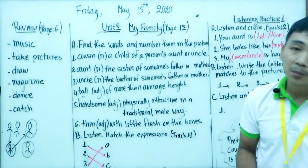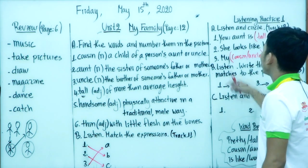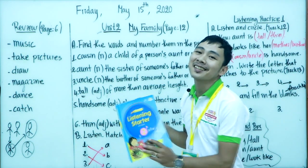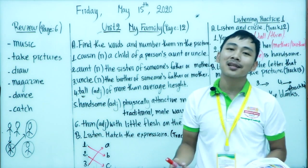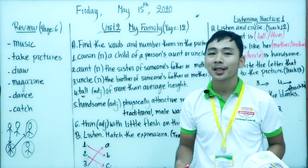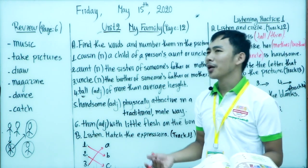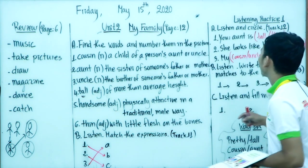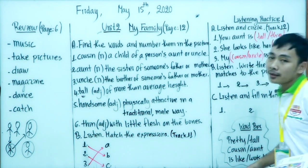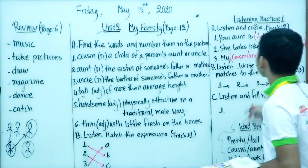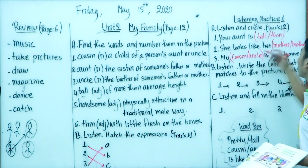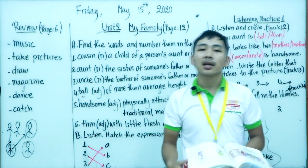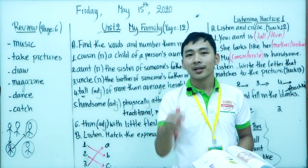Now let's move to Listening Practice 1A. Listen and circle — Track 12. Since this is a listening coursebook, every exercise requires you to listen to get the answer. When you hear the word 'tall,' circle 'tall'; when you hear 'thin,' circle 'thin.' Are you ready? Let's start listening.